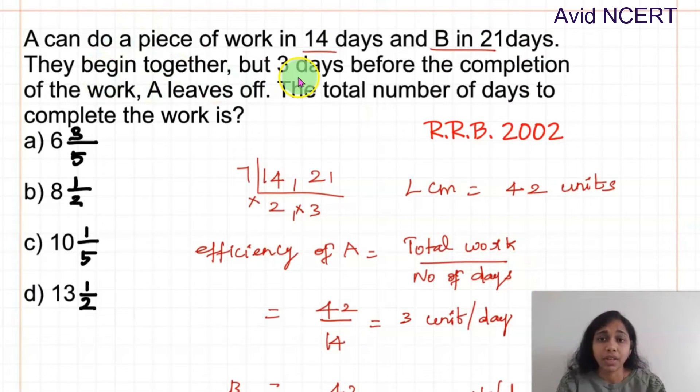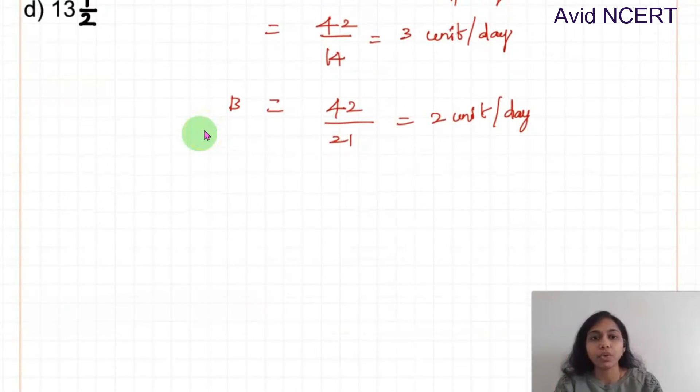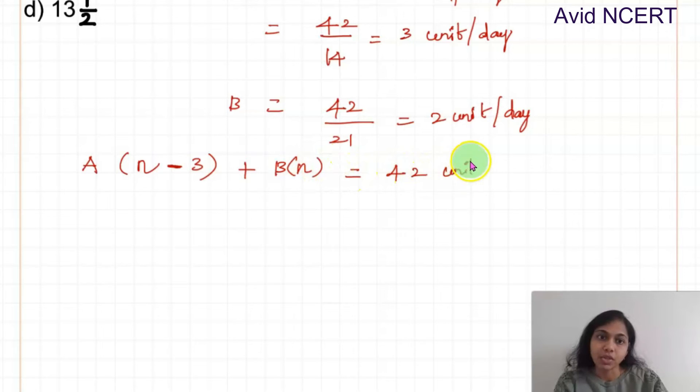The question here is they begin together but 3 days before the completion of work. The total number of days is question mark. So if the total number of days taken is N, let N be the total number of days taken to finish the work. So before 3 days, N minus 3 days is the number of work done by A plus B done the entire work for the total number of days. B times N equals the total unit of work which is 42 units.